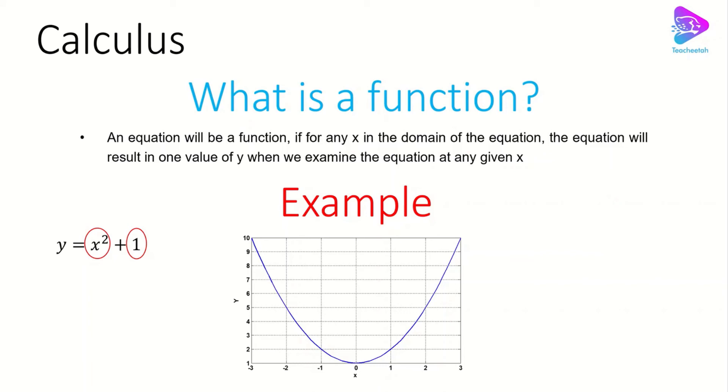and basically for here in minus 3 to 3, we have only one value for y. For example, for x equal to 2, we just have one value for y which is 5. Now it's time to answer the question of the previous video.